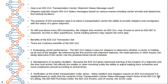There are three primary benefits of the EDI 214. First, evaluating carrier performance: the EDI 214 makes it easy for shippers to determine whether a carrier is meeting its obligations, by referencing shipment status data so that the retail partner or buyer can determine if the carrier merits continued use. Second, management of receiving: the EDI 214 gives advanced warning of the location and movement of a shipment until arrival, allowing retailers or receiving entities to adjust loading docks and move employees according to arrival times.